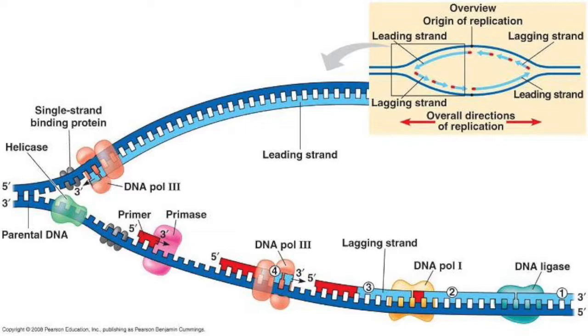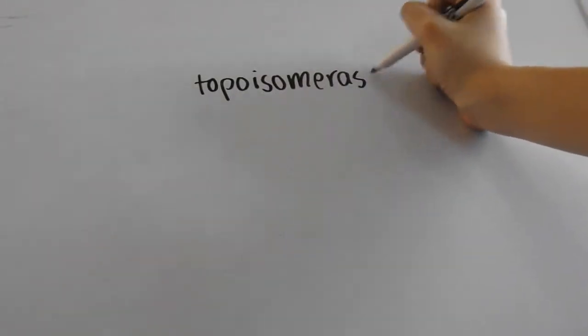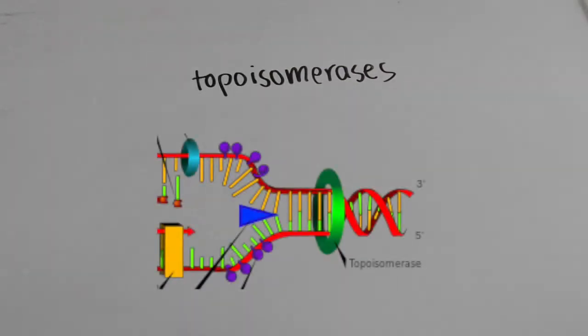There are a ton of other enzymes contributing to this whole process, such as topoisomerases, which lessen the tension of the tightly entwined DNA, but you definitely don't need to know all of the enzyme names for the AP exam.